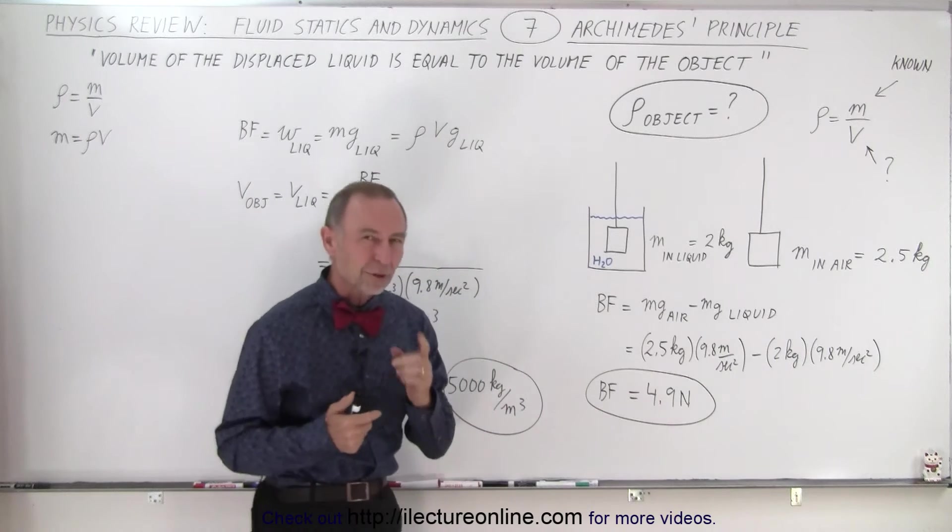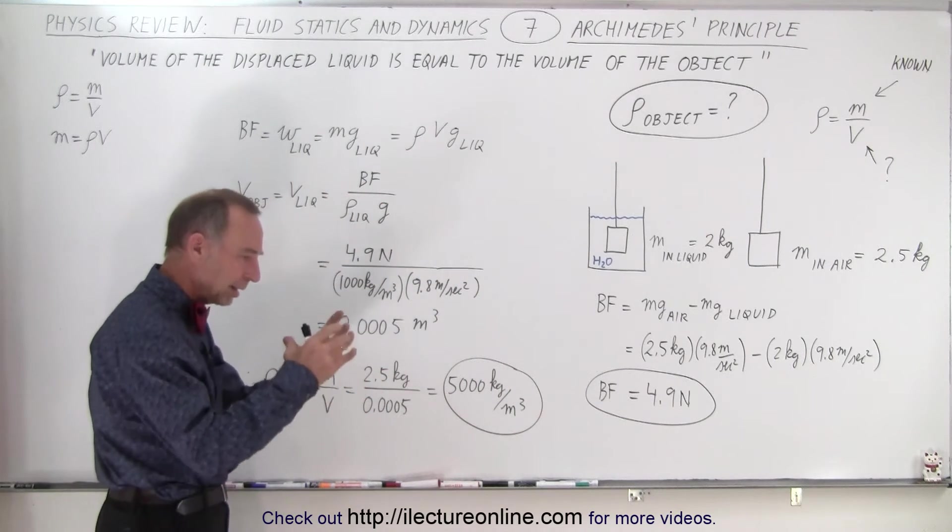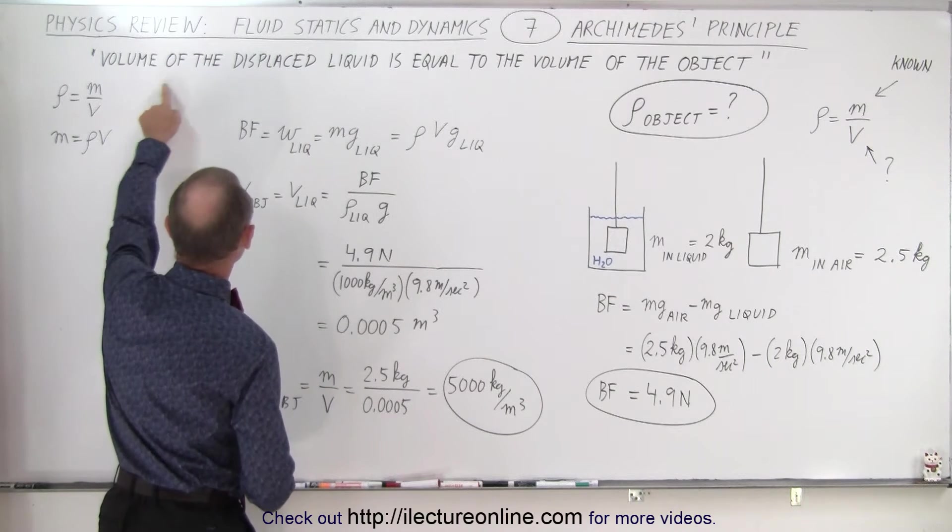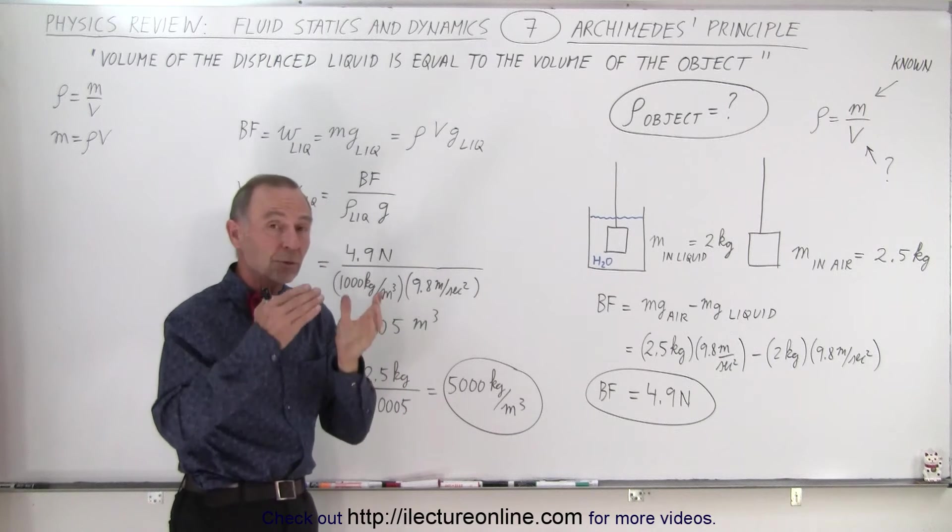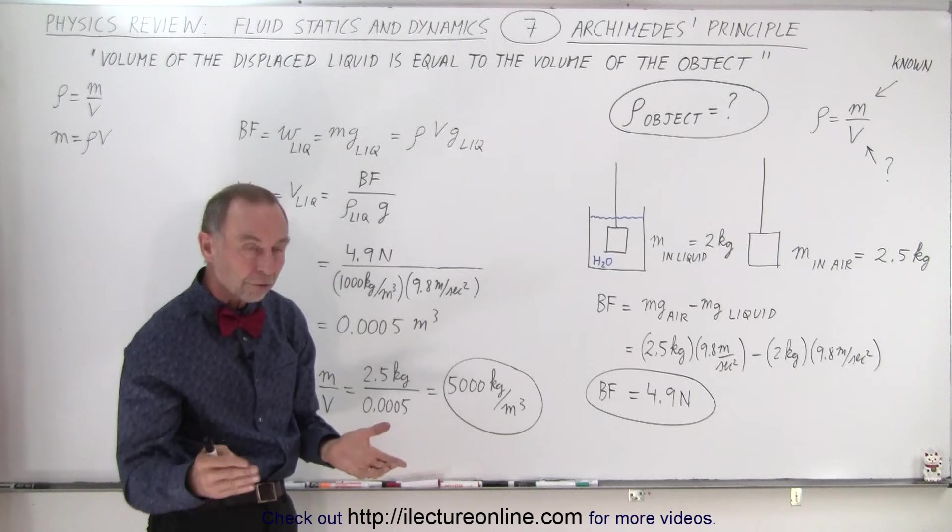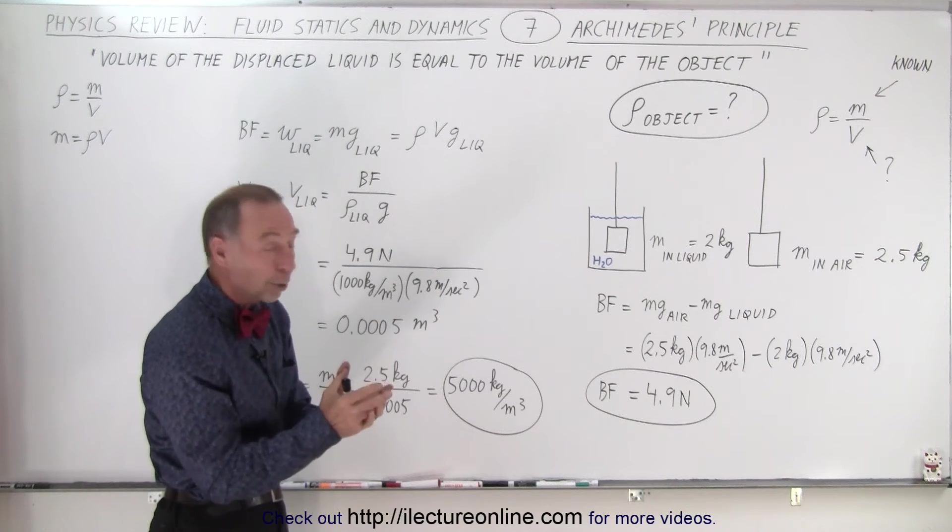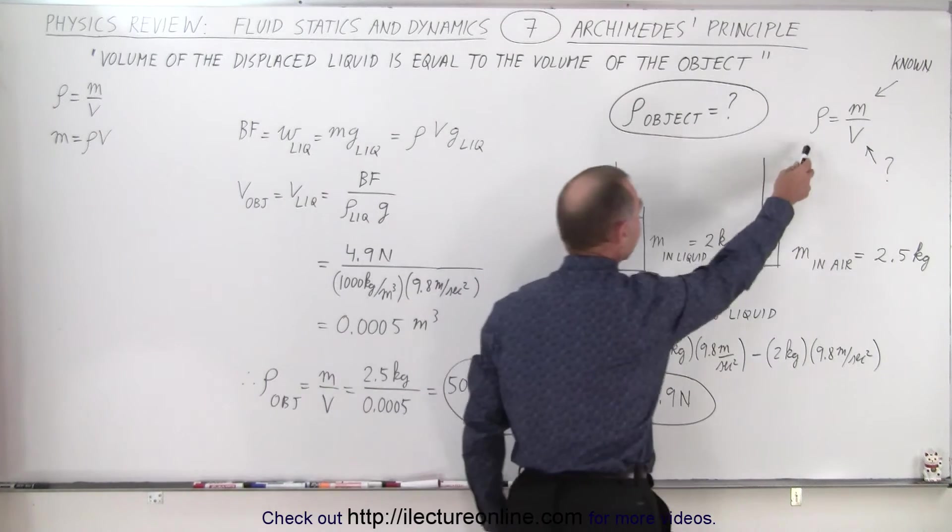So he was stumped until he realized that if he were to place the crown in a liquid, the volume of the displaced liquid is equal to the volume of the object. So in this case, if he could take the crown and dunk it in some water and watch the overflow of water, the amount of overflow would be equal to the volume of the crown, and then he could figure out the density of the crown.